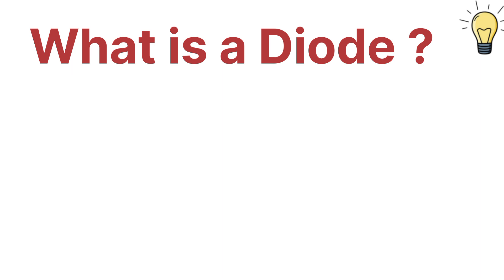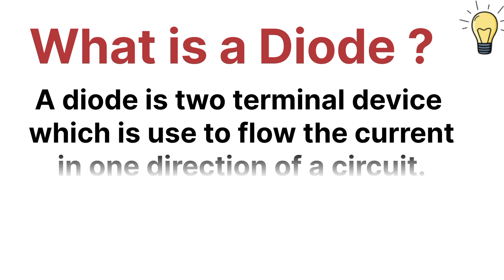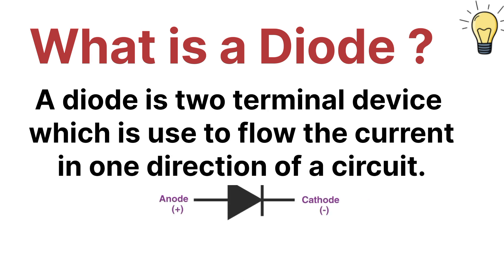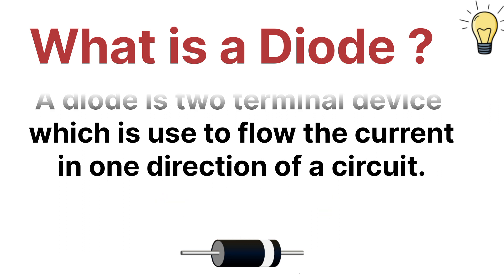If someone asks you what is a diode, you have to answer that a diode is nothing but a two-terminal electronics component which is used to conduct the electric current in one direction in a circuit. So this is the definition of a diode.